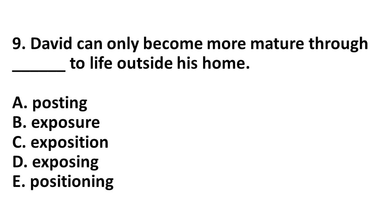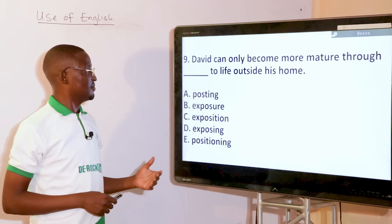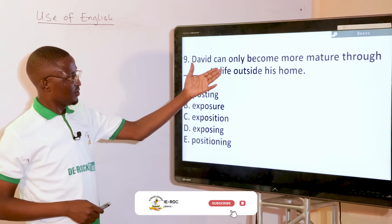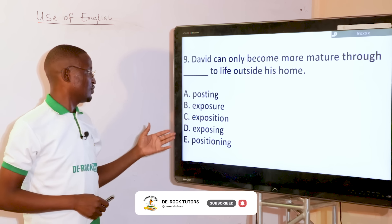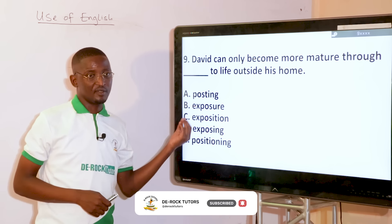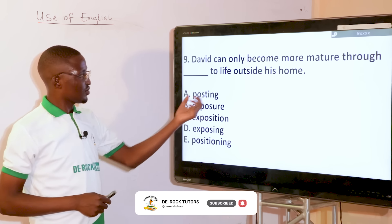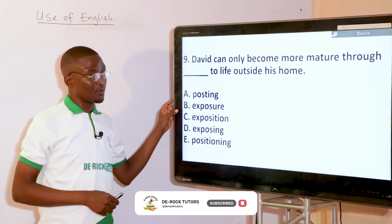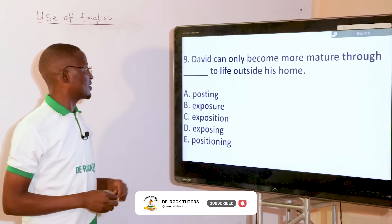David cannot only become more mature through dash to life outside his home. The options are: posting, exposure, exposition, exposing, positioning. David can only become more mature through exposure — getting exposed to life outside his home. Option B, exposure, is the best answer.